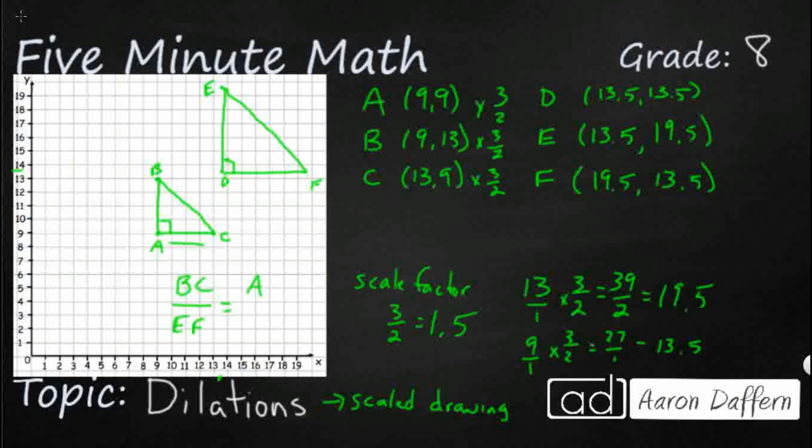AC of the smaller drawing to DF of the larger drawing. And obviously, there's a lot more that we could make. But you can use these dilations or these scaled drawings to make slightly larger or slightly smaller pictures. And then you can make as many proportions as you like.